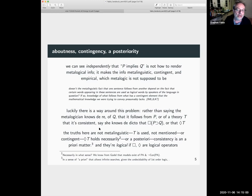So here's a quote from Hartree: doesn't the metalinguistic fact that one sentence follows from another depend on the fact that certain words appearing in these sentences are used as logical words by speakers of the language in question. If so, knowledge of what follows from what has the contingent element that the mathematical knowledge, in this case metalogical mathematical knowledge we were trying to convey presumably lacks.